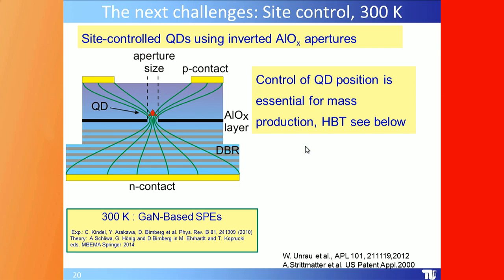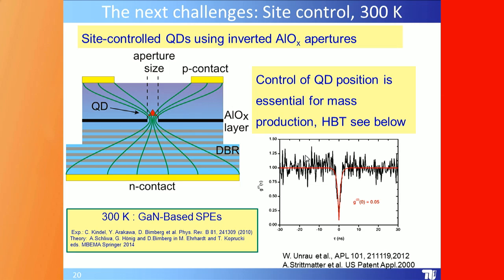Looking at the Hanbury Brown–Twiss experiment confirms that you do indeed have a single photon emitter. This was patented by Strittmatter and co-authors.